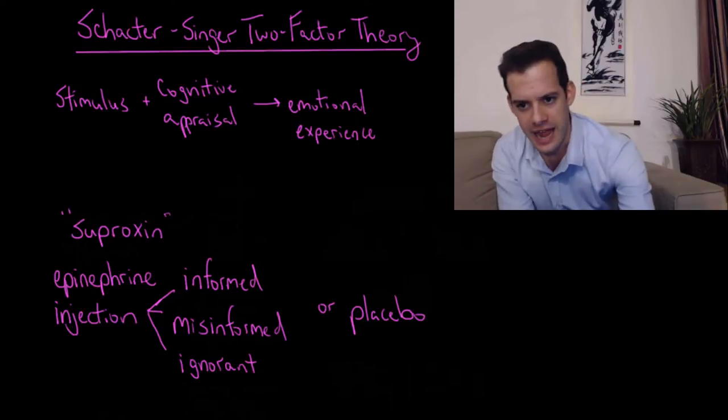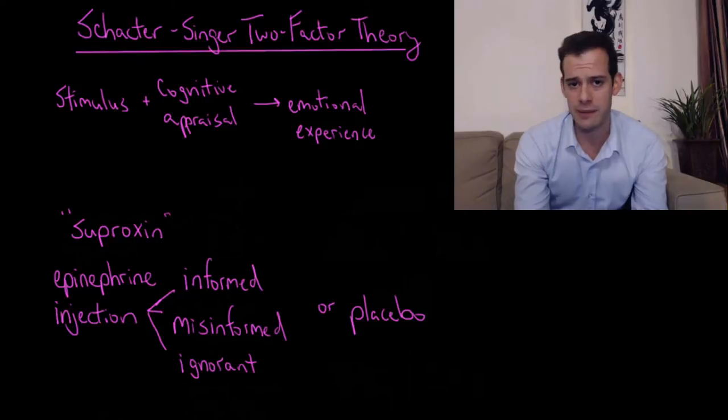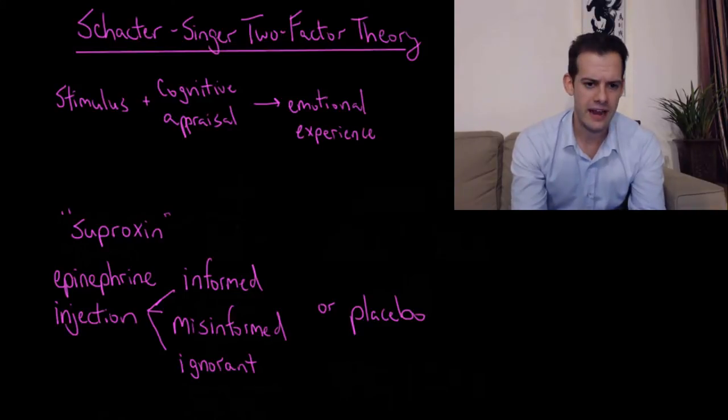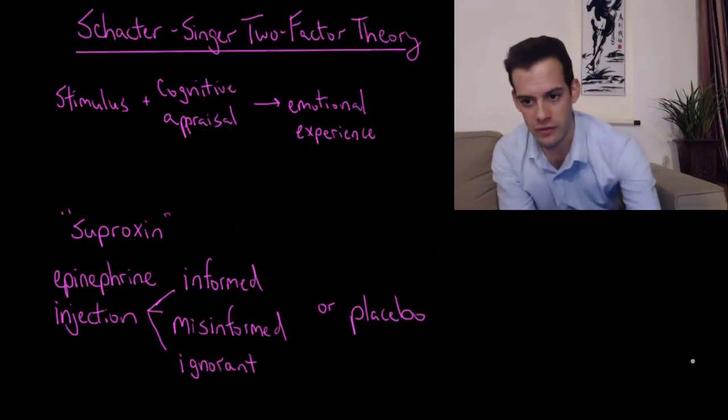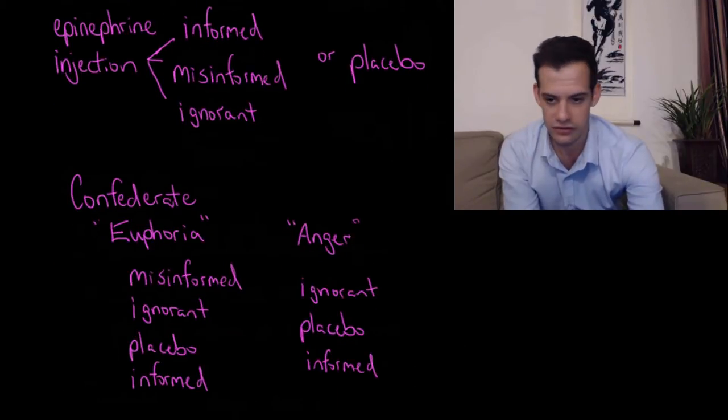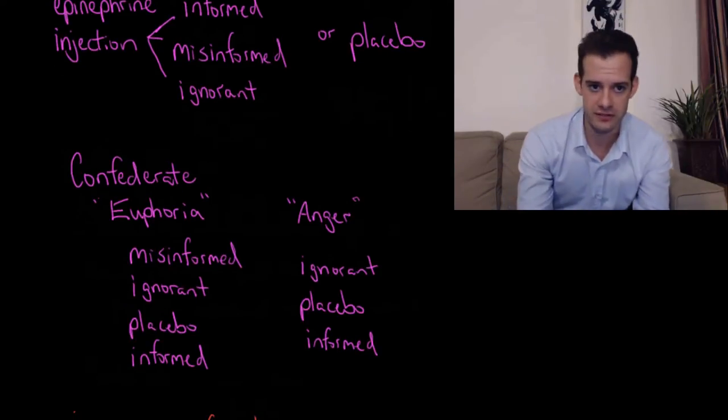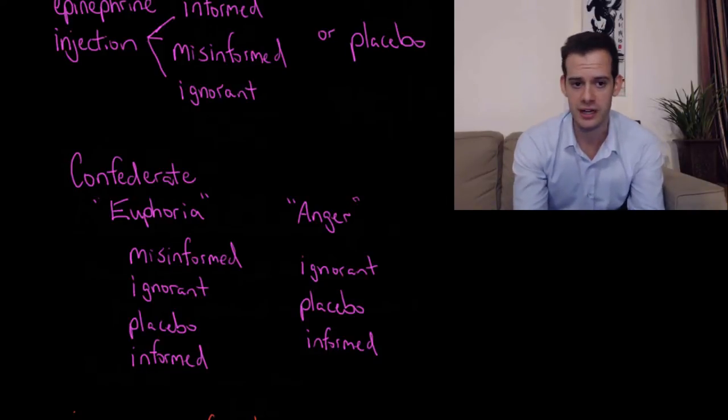The participants go into a waiting room. They're told the Suproxin is going to take 20 minutes or so to have an effect. So you can go into the waiting room here and there's another participant, you can fill out some forms, we need to get some information. While they're doing this, they're in the room with what they believe is another participant, but this person is actually a confederate working for the experimenters. There's now two different variations. Some of these participants—whether they're informed, misinformed, ignorant, or got a placebo injection—are going to interact with a confederate who is acting euphoric.